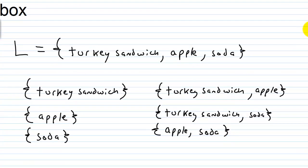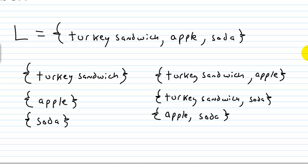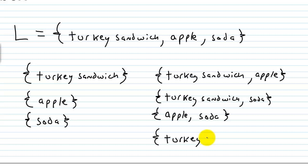What else could I take out? Well, I could take out everything. I could have a subset that's equal to the original set. Remember, if two sets are equal, they are automatically subsets of each other. So I could take out the turkey sandwich, the apple, and the soda.